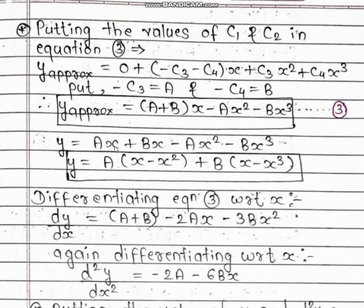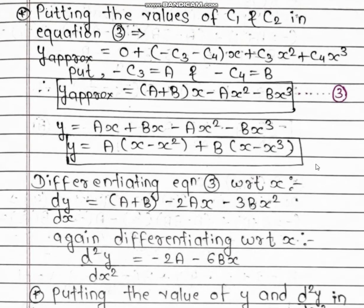Expanding and factoring equation number 3, we take a and b as common coefficients: y_approximate = a(x − x²) + b(x − x³).